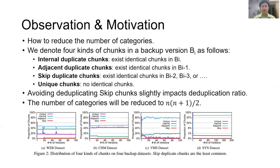We denote four kinds of chunks. Internal chunks could find other identical chunks in Bi. Adjacent chunks could find other identical chunks in Bi-1. Skip chunks could find other identical chunks in more earlier backup versions like Bi-2 or Bi-3. Unique chunks cannot find identical chunks. We found that avoiding deduplicating skip chunks slightly impacts the deduplication ratio, which also reduces the kinds of life cycles. Because each kind of life cycle maps to a category, the number of categories are also reduced to an acceptable level.